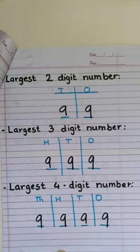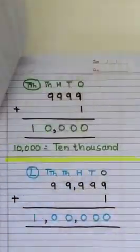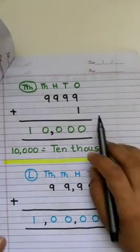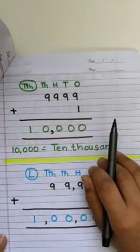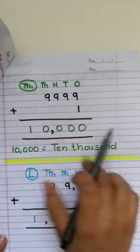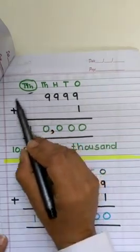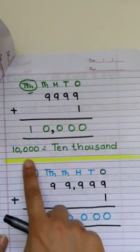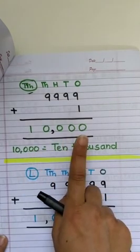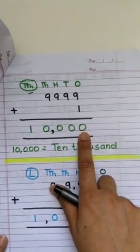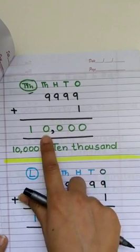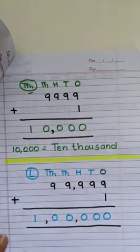Perfect. Now, what happens when we add 1 to 9,999? We get 10,000 and a new column for 10,000. See? 10,000 is a 5-digit number: 1, 10, 100, 1,000 and 10,000. Easy, right?